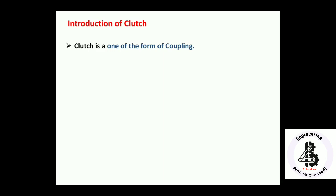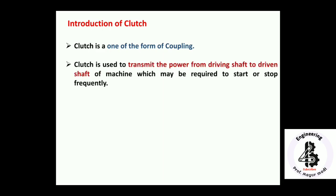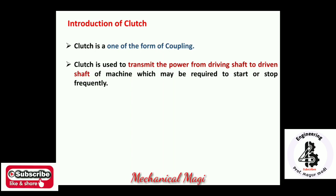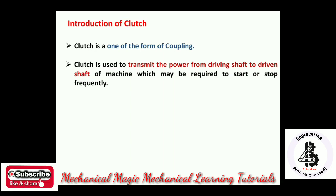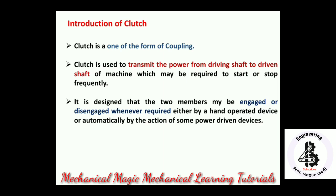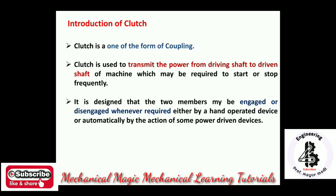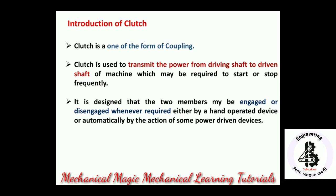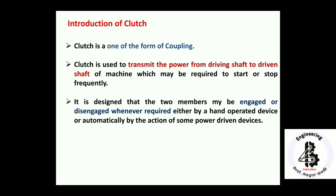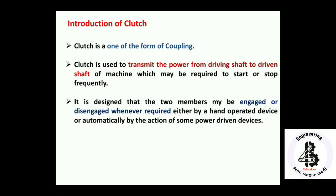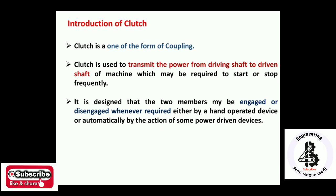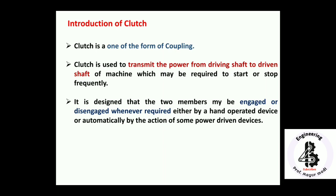Let us start with the introduction of a clutch. A clutch is one form of coupling, having similar applications to couplings covered in previous videos. A clutch is used to transmit power from a driving shaft to a driven shaft of a machine which may be required to start or stop frequently. It is designed so that two members may be engaged or disengaged whenever required, either by a hand-operated device or automatically by a power-driven system.